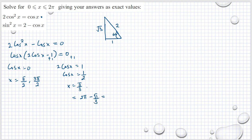That gives us 5 pi over 3. So our solutions for x are: pi over 2, 3 pi over 2, and 5 pi over 3 — and I also forgot one, that is pi over 3.